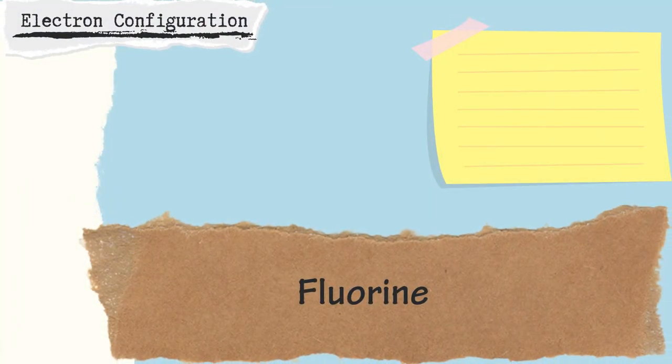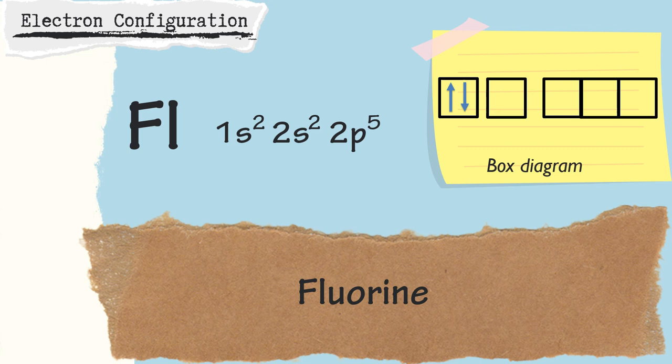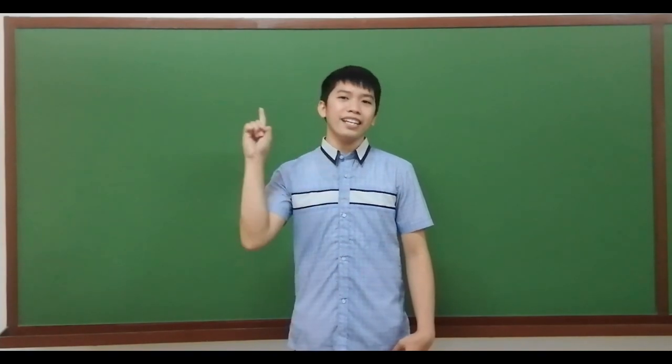For fluorine, the electron configuration and box diagram are shown. And I hope you learned a lot from this discussion. See you again on our next amazing discussion. Goodbye class!